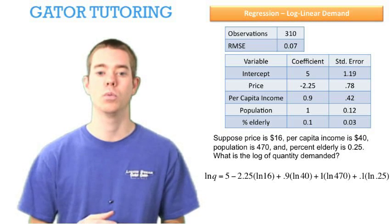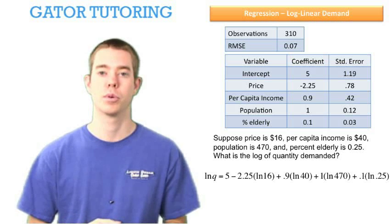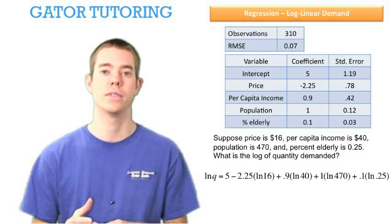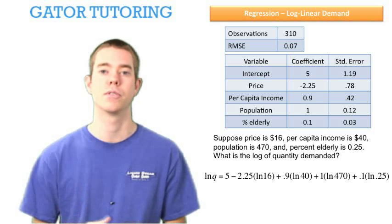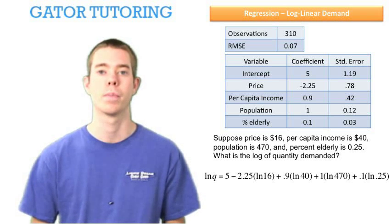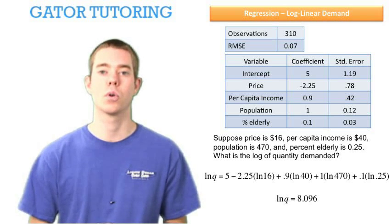So instead of 40, we're putting in the ln of 40 for per capita income. Instead of 470, we're putting in the ln of 470 for population, and so on and so forth. All of those are just numbers, of course, and we can solve that ln(q) equals 8.096.